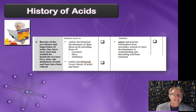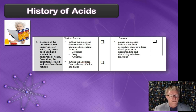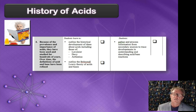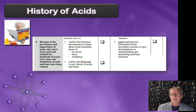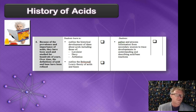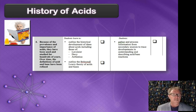In this video, we're going to be looking at the history of acid dot points to do with the HSC chemistry syllabus. It's a very brief description of how our theories of acids and bases has changed throughout time based on experimentation. Like any science theories, if the theory does not explain experimental evidence, then we need to look at it and maybe modify that theory based on new information.